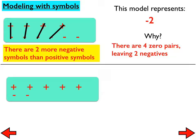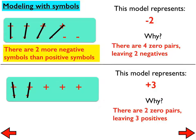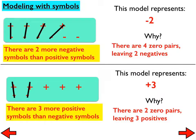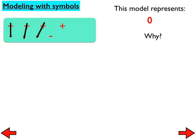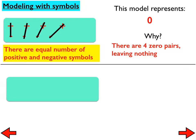How about this situation? What do you think that model might represent? Positive three. That would be correct, because there are two zero pairs leaving three positives — three more positive symbols than negative symbols. It's that idea that will make this transition into positive and negative decimals, and even positive and negative fractions. How about this one? Zero — because there are four zero pairs leaving an equal number of positives and negatives, so we have nothing left over.